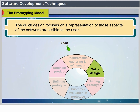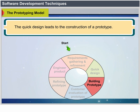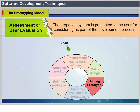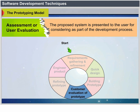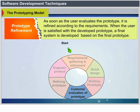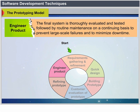The quick design focuses on aspects of the software visible to the user and leads to construction of a prototype. The proposed system is presented to the user for evaluation. Once the user evaluates the prototype, it is refined according to requirements. When the user is satisfied, a final system is developed based on the final prototype. The final system is thoroughly evaluated and tested, followed by routine maintenance to prevent large-scale failures and minimize downtime.